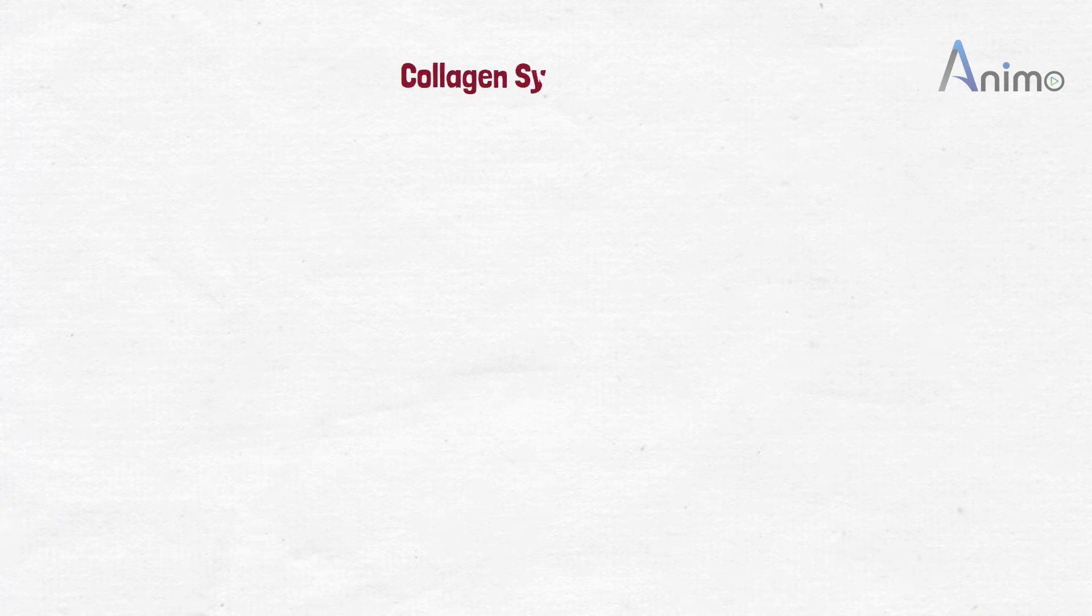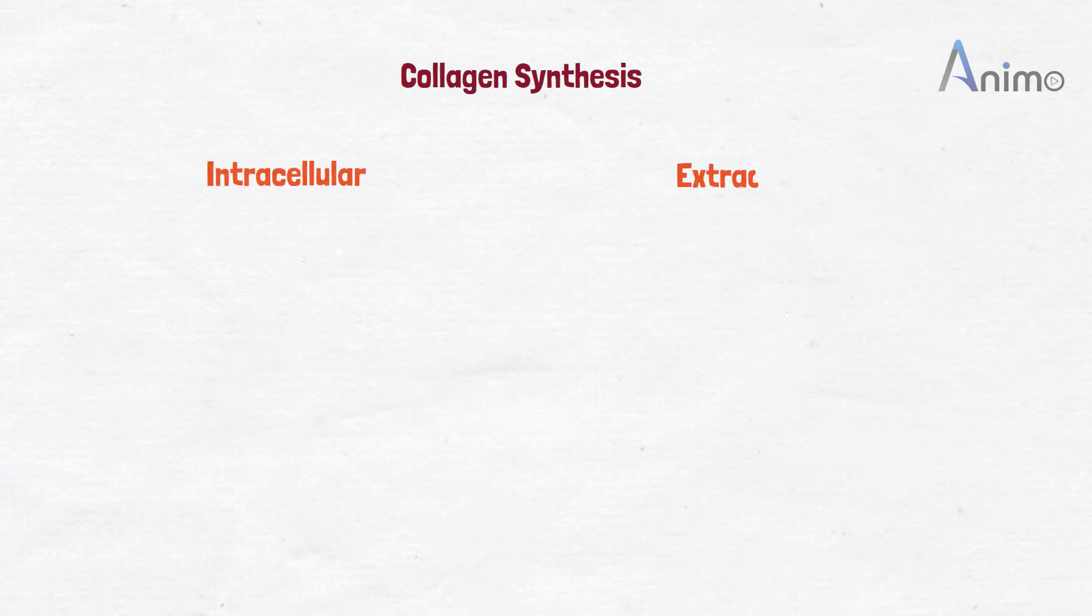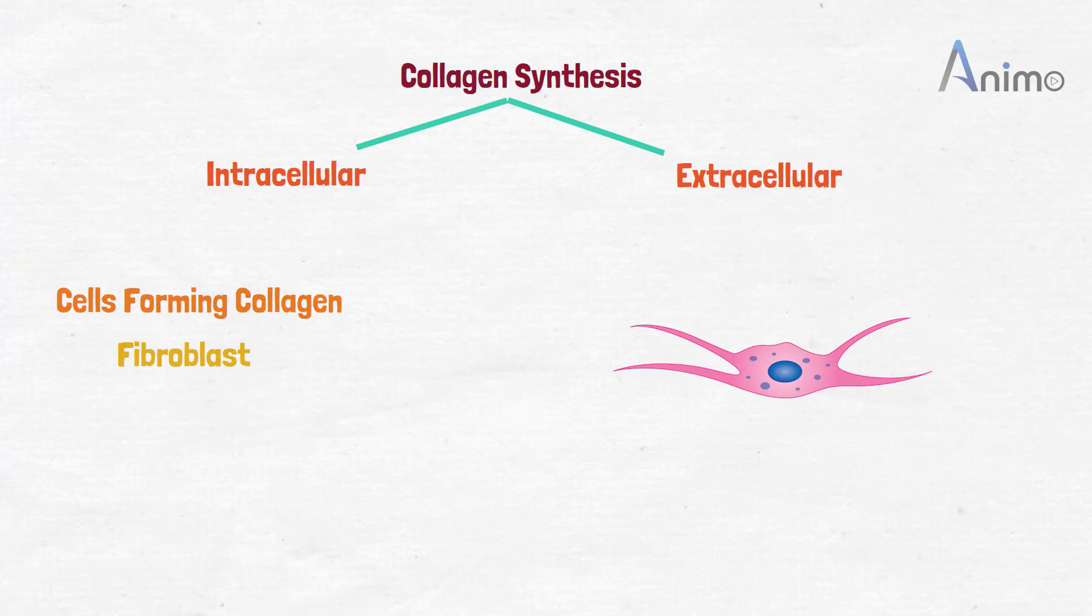Let's talk about collagen synthesis. It occurs inside as well as outside the cell. Which cells mainly? Fibroblasts - the main connective tissue in the body - and along with it there are other cells such as osteoblasts in bones and chondroblasts in cartilage.